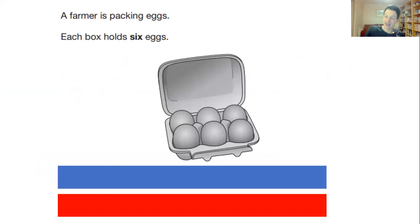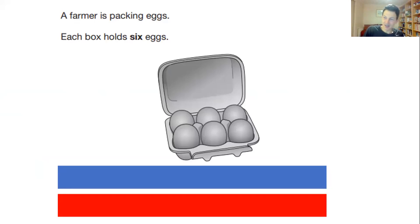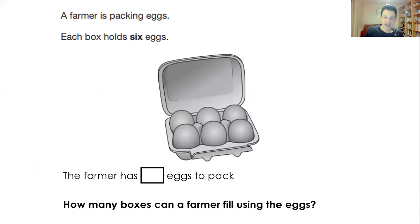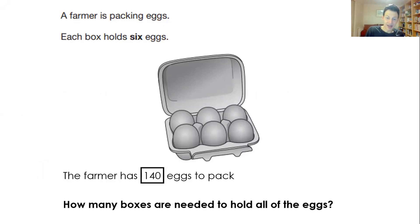I'm going to use the same techniques in lots of contexts that could be used in upper key stage two. The examples on this video are from SATs papers, though the examples I create will be much broader than that. Here again I could ask: what could the question be, and what information is needed to answer it? In this instance I'd probably reveal the information first — the number of eggs the farmer has — then think about the possible questions. I'd reveal two possible questions: one, how many boxes can a farmer fill using all the eggs; and then we see the number and the related question, how many boxes are needed to hold all of the eggs. Children can then see how that one change affects the answer.